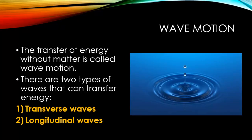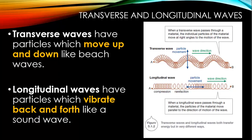So we've already learned some things about wave motion and the different properties of waves, but let's just refresh our memory. The transfer of energy without matter is called wave motion. There are two types of waves that can transfer energy: transverse waves and longitudinal waves. Transverse waves have particles which move up and down like a beach wave, and longitudinal waves have particles which vibrate back and forth like a sound wave.